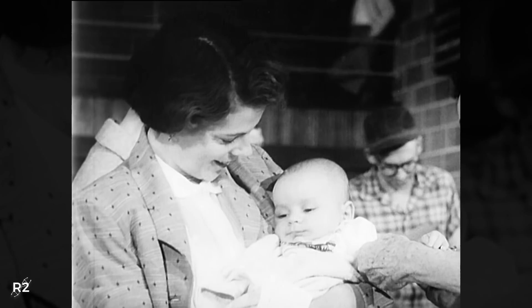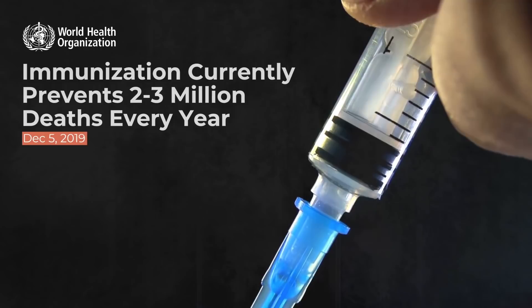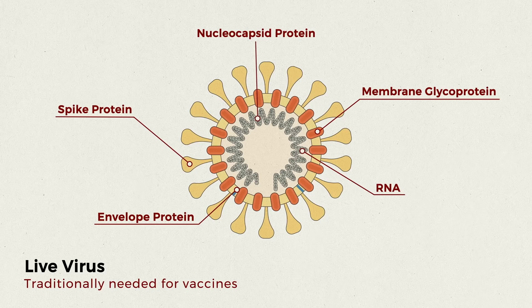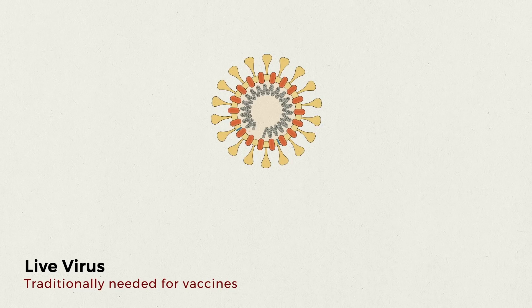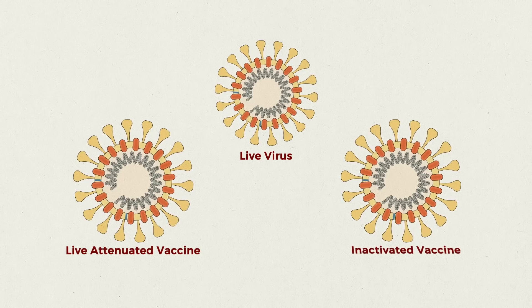Vaccines are one of medicine's greatest inventions, and prevent an estimated 2 to 3 million deaths every year. Vaccines have eradicated smallpox, reduced global child mortality rates, and prevented countless birth defects and lifelong disabilities, such as paralysis from polio. Historically, vaccines work by introducing a weaker form of the virus to the body, or by introducing a dead form of it. These are called live attenuated vaccines and inactivated vaccines.